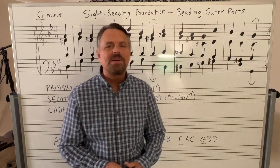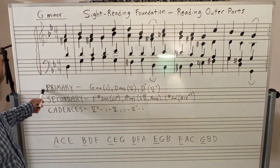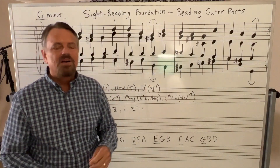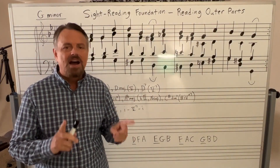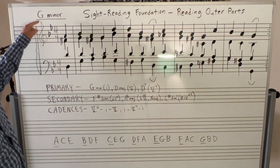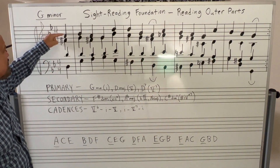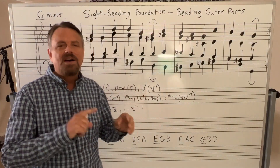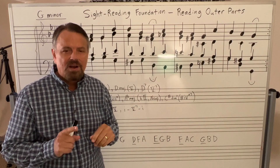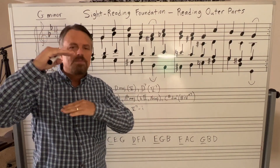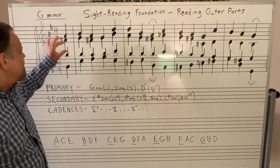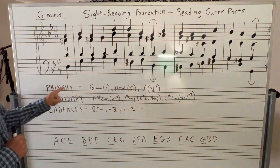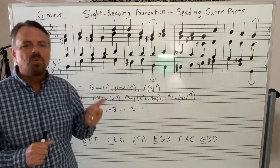The first thing we want to do with chord charts is look at the primary chords. Primary chords are the one, the four, and the five chord. So if we're in the key of G minor — and by the way, this soprano and bass line are the same as the video I posted about two days ago where I was talking about how to read the outer parts. Primary chords are the one, four, and the five chord.